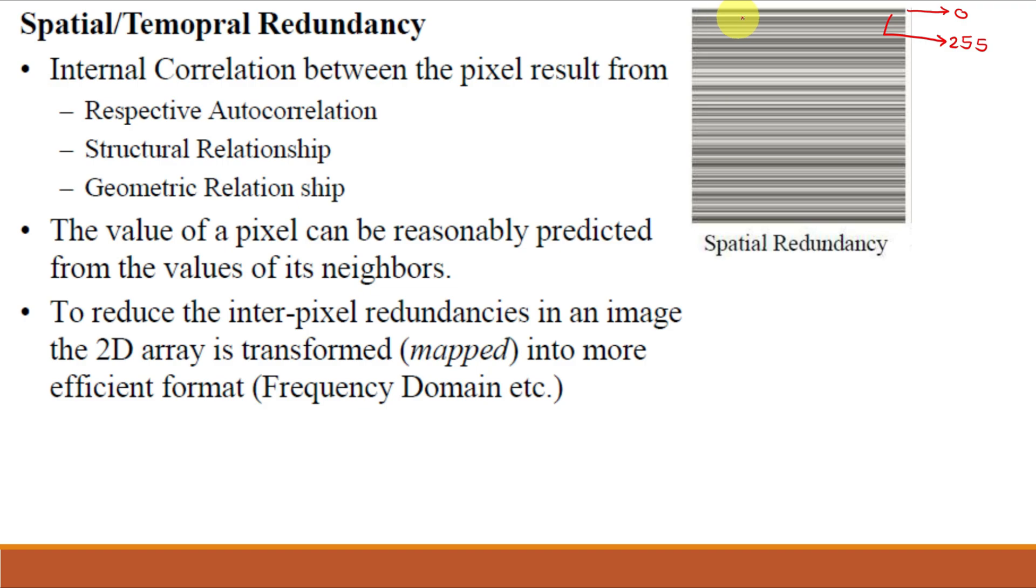For interpixel redundancy, the internal correlation between pixels may result from either autocorrelation, structural relationship, or geometric relationship. Due to this, the value of a pixel can be reasonably predicted from the values of its neighbors. One method to reduce interpixel redundancies is that the 2D array of spatial domain is transformed into a more efficient frequency domain.